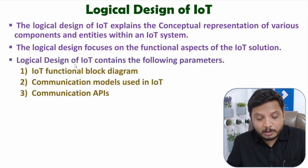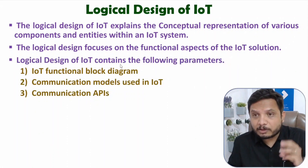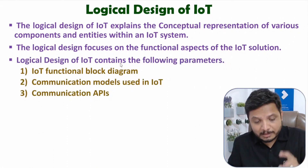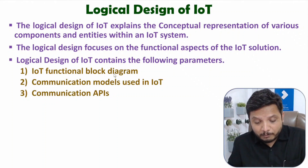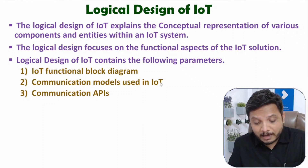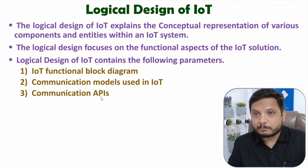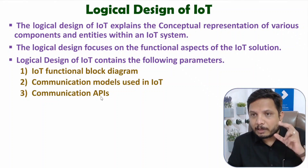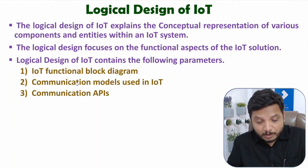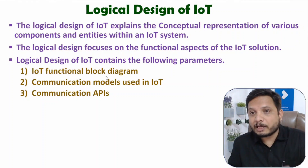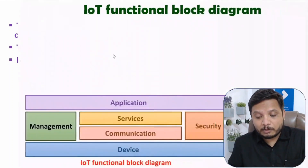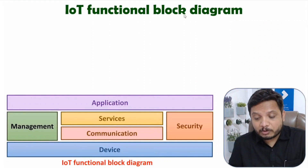The logical design of IoT contains three major parameters. The first is the IoT functional block diagram, which I will explain in this very video. After this, I will make two other videos based on basic communication models and communication APIs. So in this video, I will explain the IoT functional block diagram, which is a parameter of the logical design of IoT. Let's see how the IoT functional block diagram is structured.